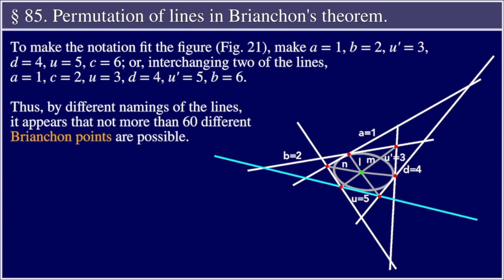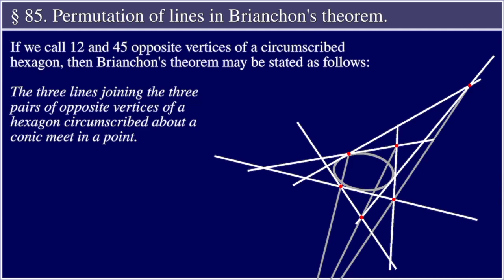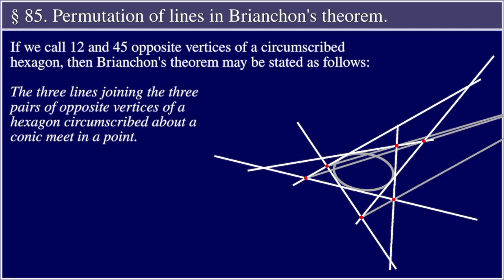Or interchanging two of the lines: A equal 1, C equal 2, u equal 3, D equal 4, u' equal 5, and B equal 6. Thus, by different namings of the lines, it appears that not more than 60 different Brianchon points are possible. If we call 1,2 and 4,5 opposite vertices of a circumscribed hexagon, then Brianchon's Theorem may be stated as follows: The three lines joining the three pairs of opposite vertices of a hexagon circumscribed about a conic meet in a point.